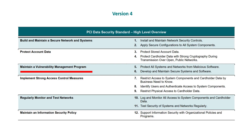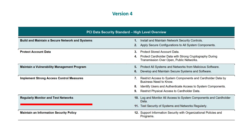Domain 3: Maintain a Vulnerability Management Program. Requirement 5: Protect all systems and networks from malicious software. Requirement 6: Develop and maintain secure systems and software. Domain 4: Implement Strong Access Control Measures. Requirement 7: Restrict access to system components and cardholder data by business need to know. Requirement 8: Identify users and authenticate access to system components. Requirement 9: Restrict physical access to cardholder data. Domain 5: Regularly Monitor and Test Networks. Requirement 10: Log and monitor all access to system components and cardholder data. Requirement 11: Test security of systems and networks regularly.